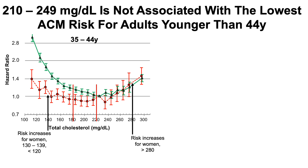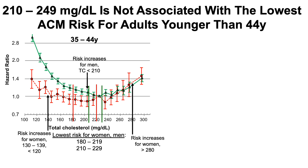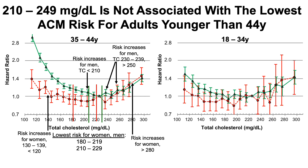For men in the 35 to 44 age group, 210 to 229 was associated with the lowest risk of death for all causes. Risk then increases for men at total cholesterol less than 210, between 230 and 239, and greater than 250.